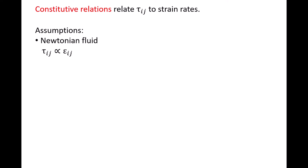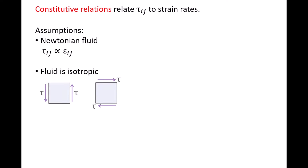In prior videos, we derived expressions for the strain rates in terms of velocity gradients. The second assumption is that the fluid is isotropic, meaning the relationship between viscous stresses and strain rates does not depend on orientation. For example, here are two fluid elements experiencing the same shear stress tau. If the fluid is isotropic, the rate of deformation, or the strain rate, of the two fluid elements will be the same.